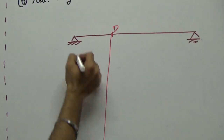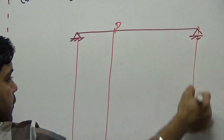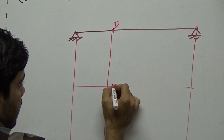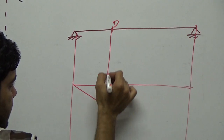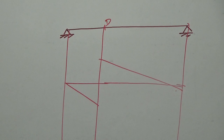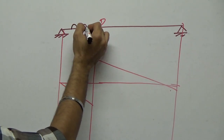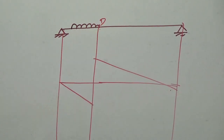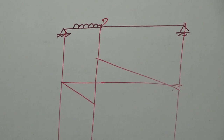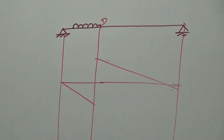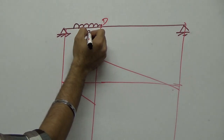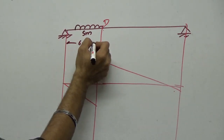For maximum negative shear force, the ILD for shear at D is the same shape. This time the UDL is placed on the negative portion, which spans 6 meters. Since the UDL is 5 meters long, it fits entirely within the 6-meter negative region.